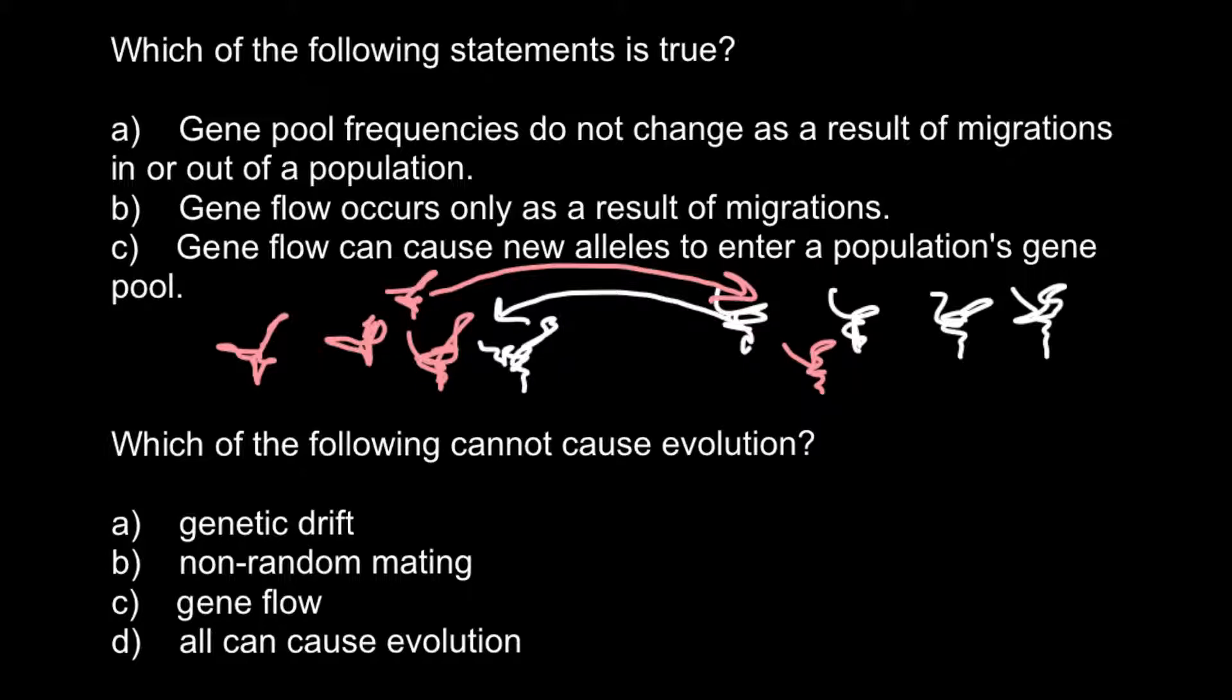Answer C: Gene flow can cause new alleles to enter a population's gene pool, and this would be the correct answer. So one more time, gene flow can be caused by migration and by just visiting.